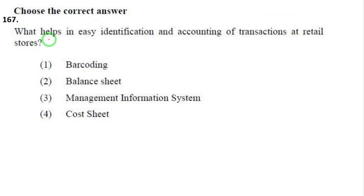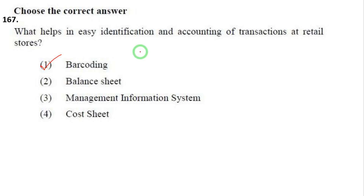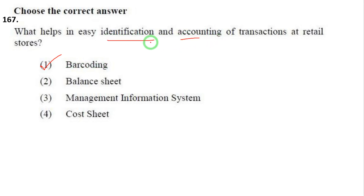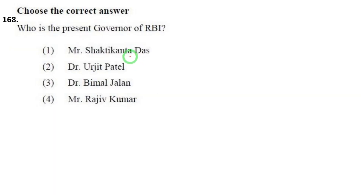Question 167: what helps in easily identifying and accounting of transactions in retail stores and supermarkets? The answer is barcode. Scanning the barcode gives product details and starts billing. Barcode helps retail stores with easy accounting and identification.